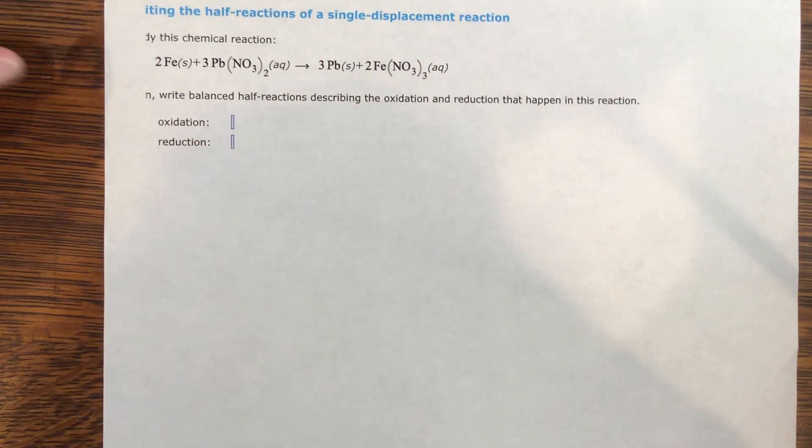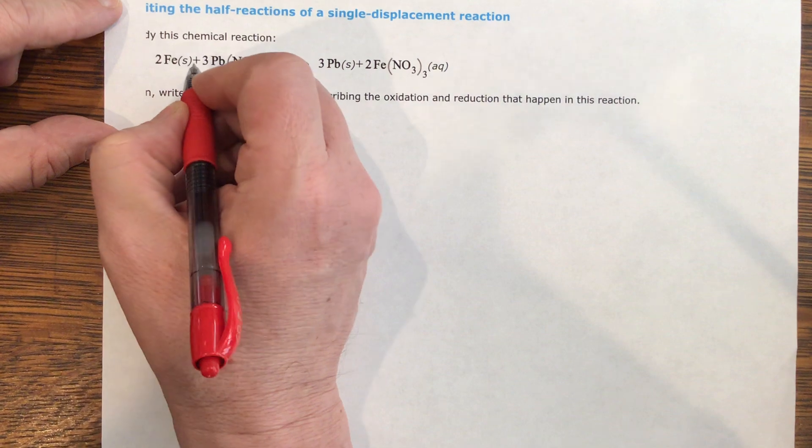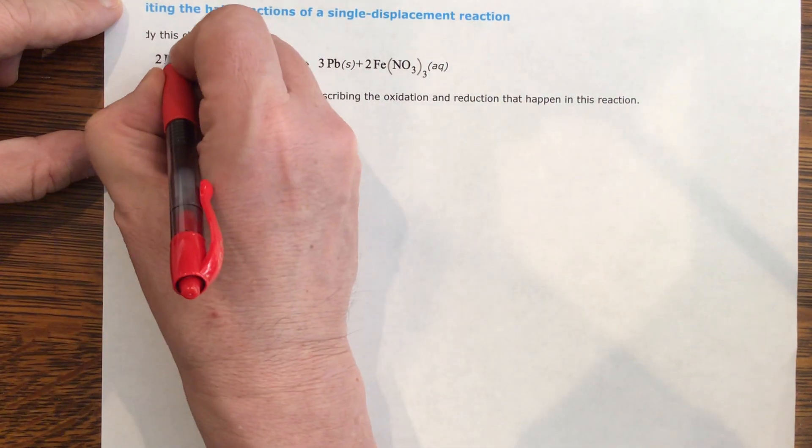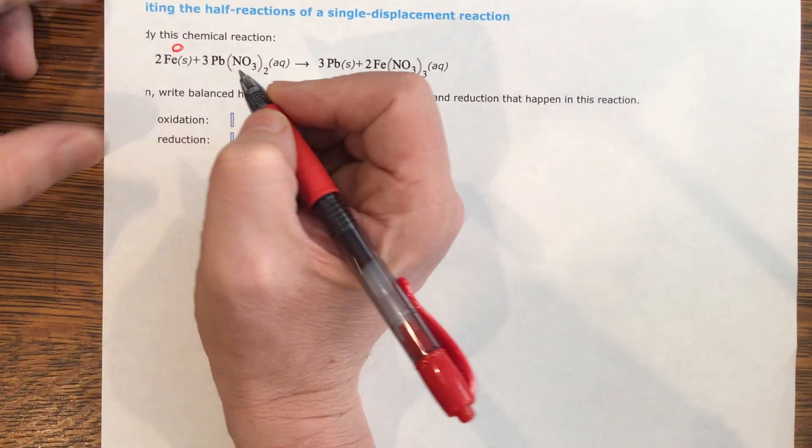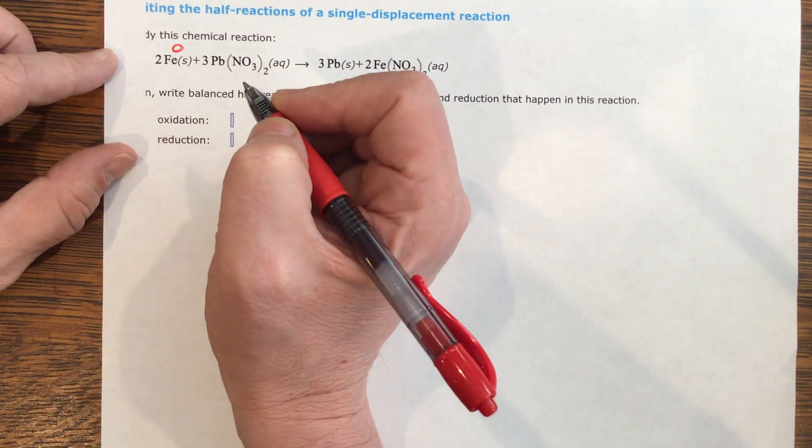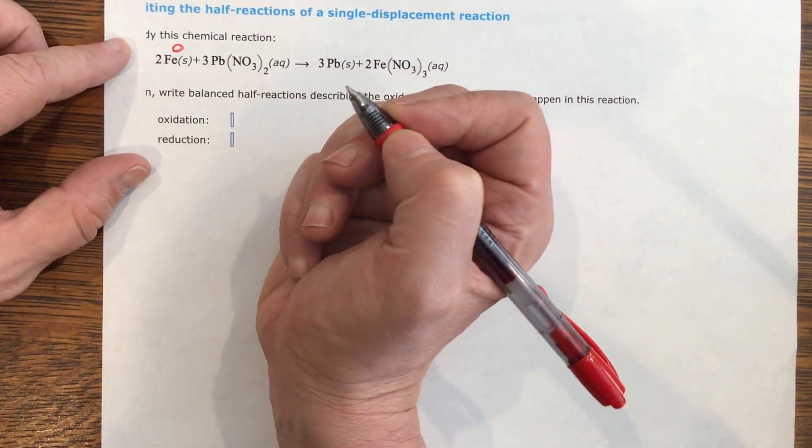I'm going to start here with iron. Solid iron, anything that you can look at under the periodic table, is going to have an oxidation number of zero. If it's not a compound, if it's just an element here, it's going to have a zero oxidation number.